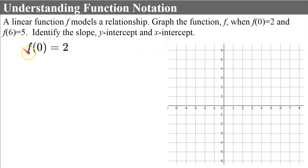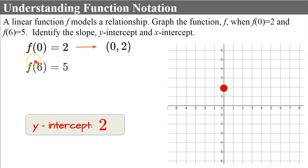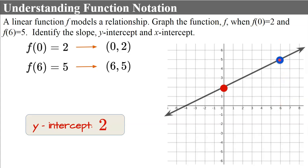Understanding function notation: f(0) equals 2 means the ordered pair (0, 2) is on the line — input 0 gives output 2, so that's our y-intercept. We graph the point (0, 2). Then f(6) equals 5 means the ordered pair (6, 5) is on the line. We graph (6, 5) and connect with our line. The slope is a rise of 3 over a run of 6, which simplifies to one-half.